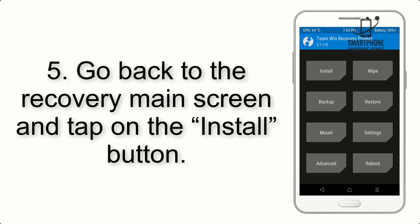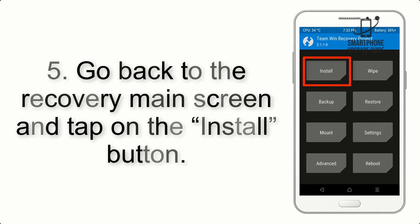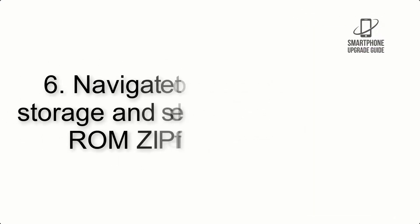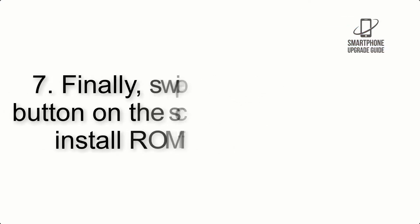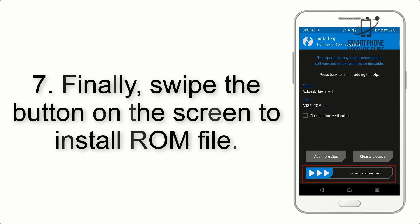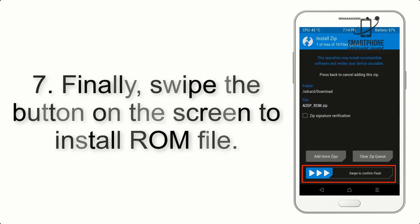Step 4: Swipe the button to wipe the device. Step 5: Go back to the recovery main screen and tap on the Install button. Step 6: Navigate to the storage and select the ROM zip file.